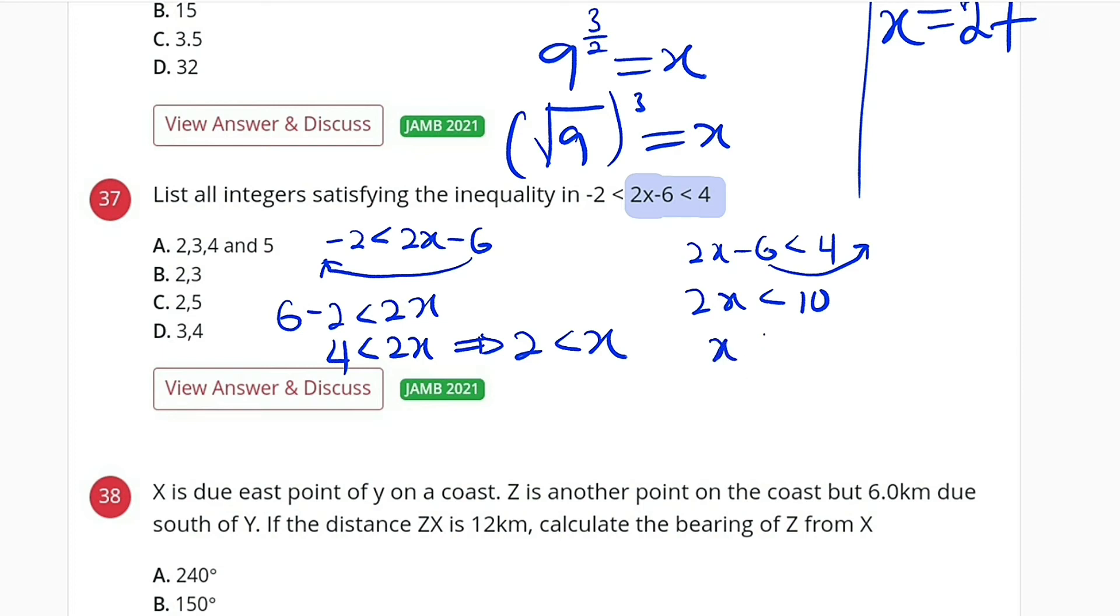Divide both sides by 2. We have x < 5. So we combine the two inequalities together. We have 2 < x < 5.